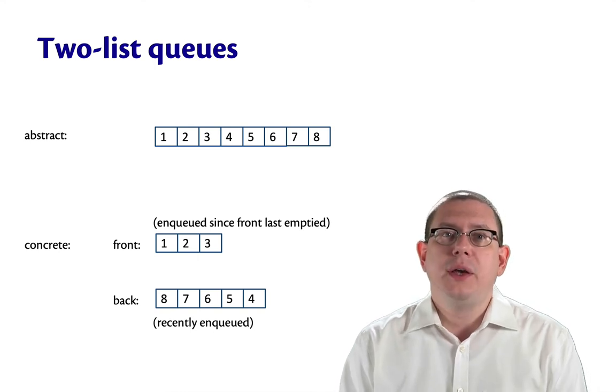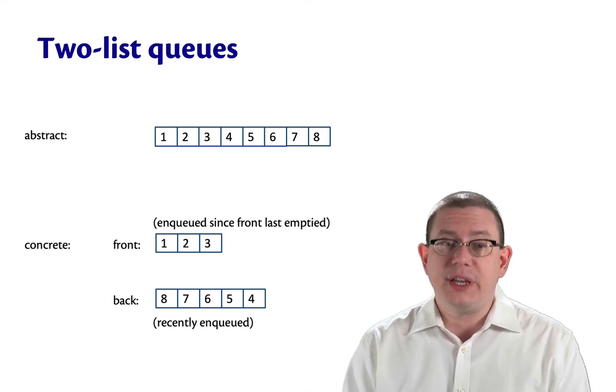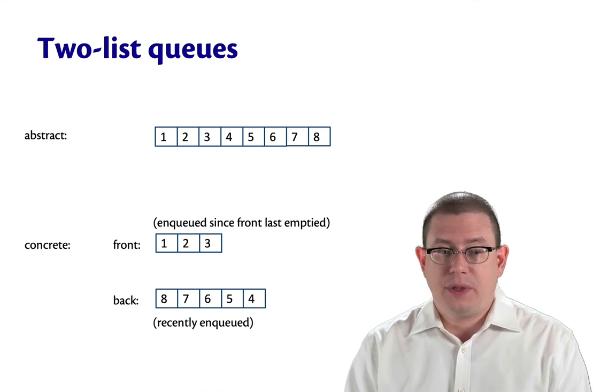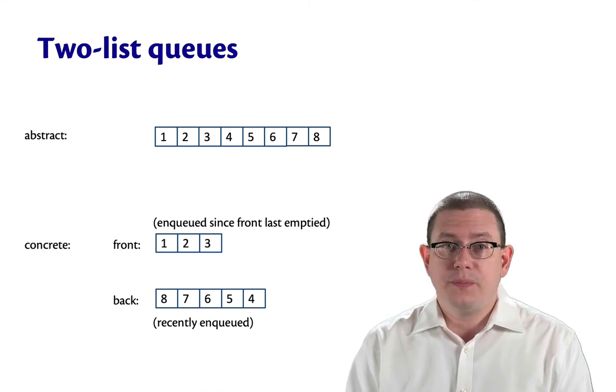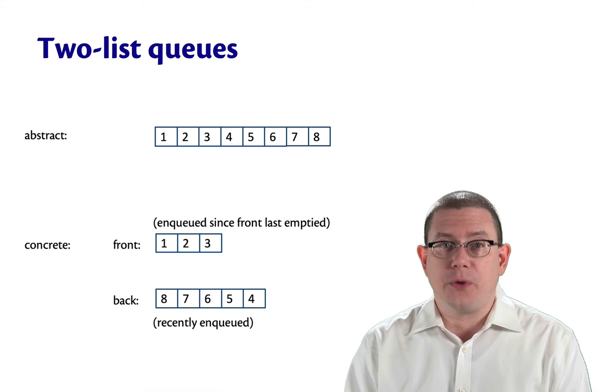But concretely, we broke that queue into two lists, a front list and a back list. The front was stored in order, the back was stored in reverse order.